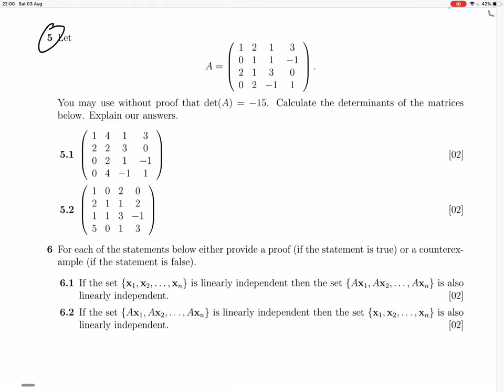Okay, so question 5 gives us this matrix, and they say the determinant of that matrix is minus 15. They ask us to calculate the determinants of these other matrices and explain your answer. Okay, so let's call that one matrix B, let's call that one C.